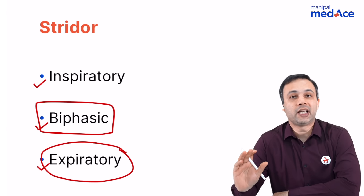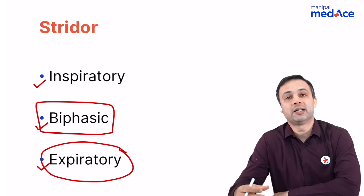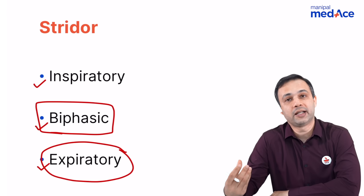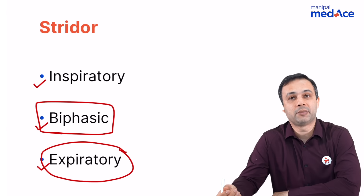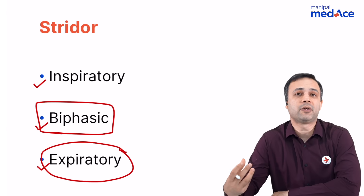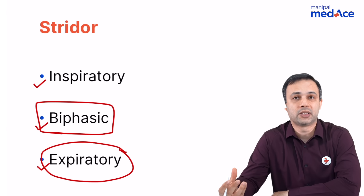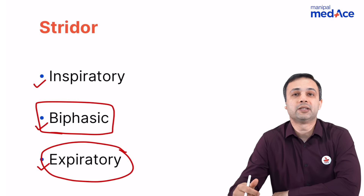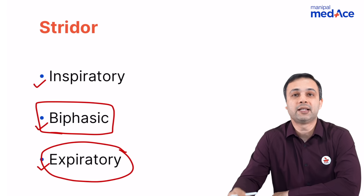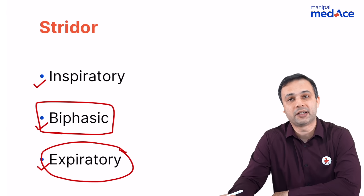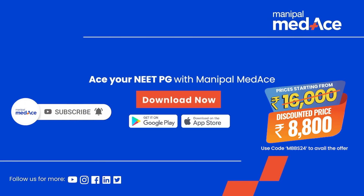When we talk about expiratory stridor, disorders in the trachea and the primary bronchus — such as a foreign body in the trachea or bronchus, or tracheomalacia — can present as expiratory stridor. Any masses in the trachea or the bronchus can also produce expiratory stridor.